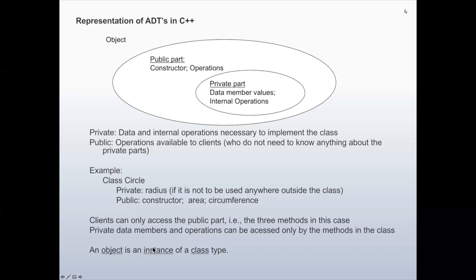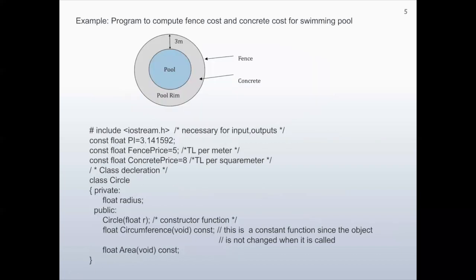An object is an instance of a class. For example, we are going to write a program to compute fence cost and concrete cost for a swimming pool. There is a pool of radius R. Around that pool, we want to construct a pool rim and need concrete for that part. Around the pool rim, we are going to construct a fence. We have to calculate the fence cost and concrete cost for the pool rim.